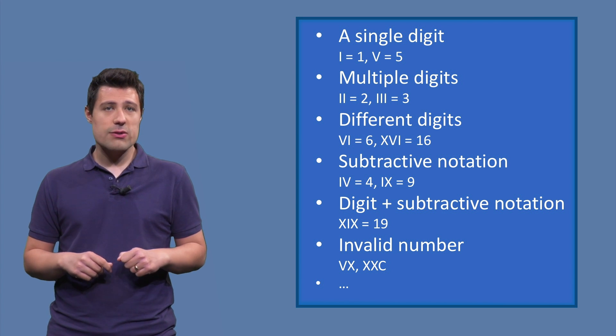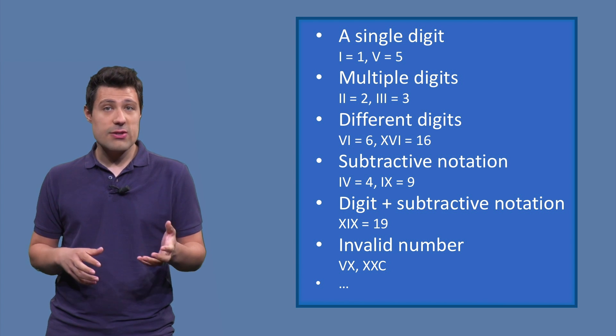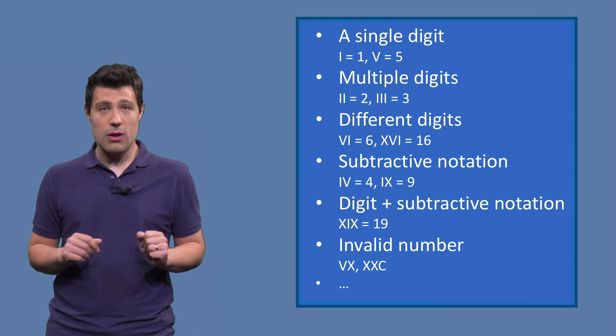And finally, some corner cases, like invalid numbers, for example, vx or xxc. In this case, I expect the system to say no, this is not a proper roman numeral, I can't convert it.